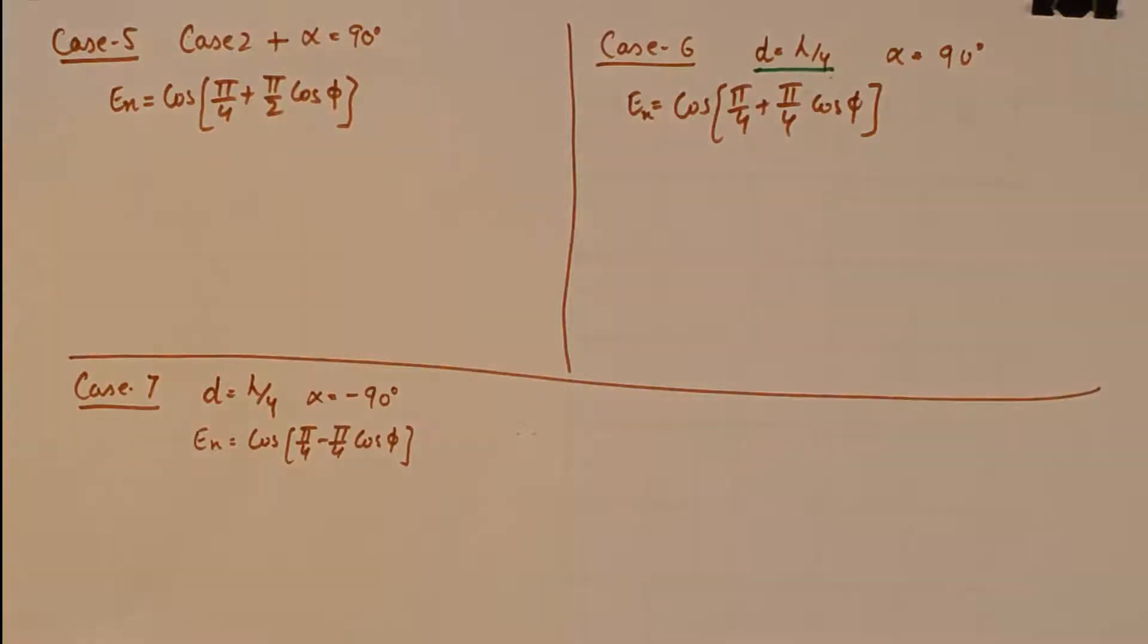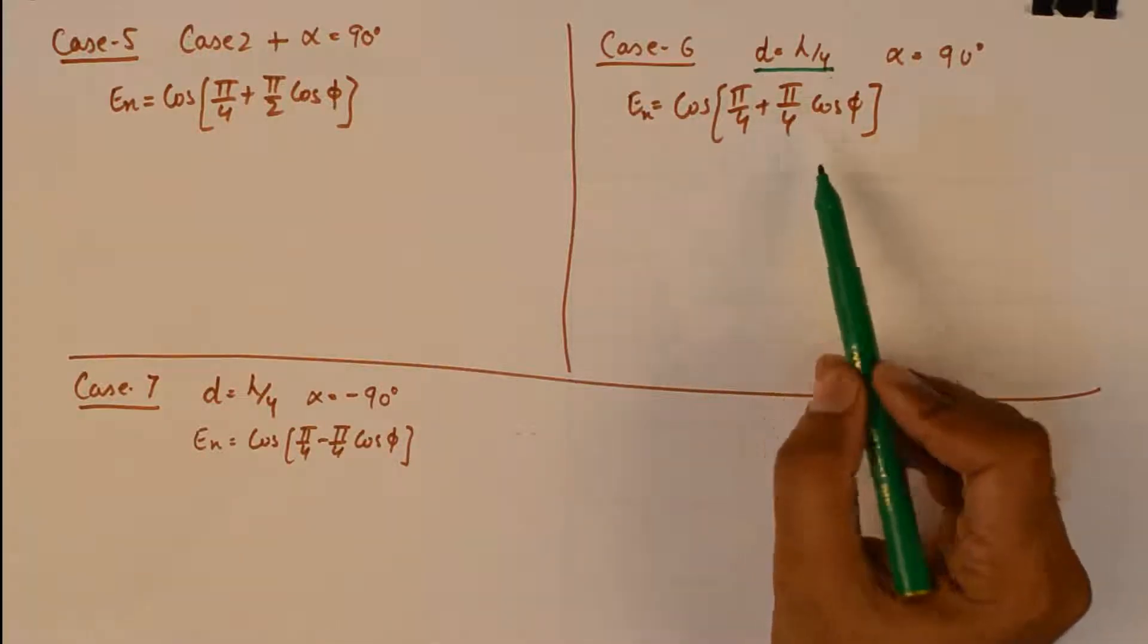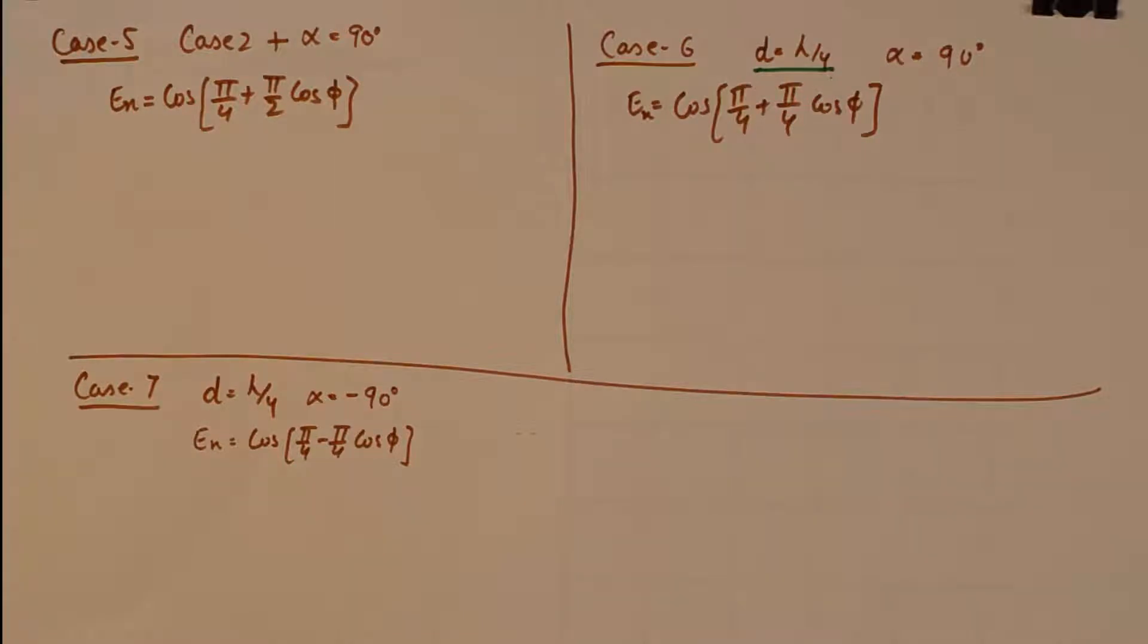The array factor now gets cos of pi by 4 plus pi by 4 cos phi. So any change in the array factor will eventually change as to how the electric field intensity is received at certain points, which is a function of angle only, because we are talking about normalized radiation. So normalized radiation would make the intensity of the radiation from the antenna equal to unity.